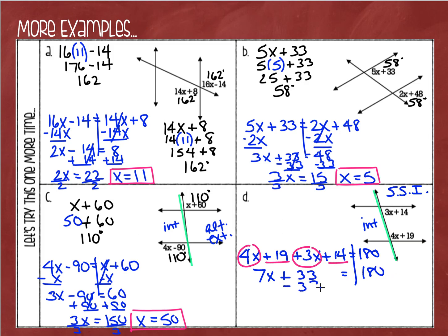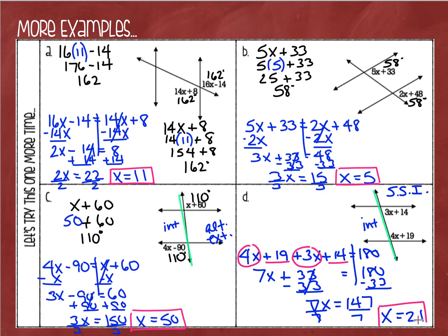I'm going to combine like terms: 4x and 3x give me 7x, and 19 plus 14 equals 33, so 7x plus 33 equals 180. I'm going to subtract 33 from each side, giving me 7x equals 147. Dividing each side by 7 gives me x equals 21. Now substituting: 3 times 21 plus 14 — 3 times 21 is 63, and 63 plus 14 equals 77. So this angle is 77 degrees.